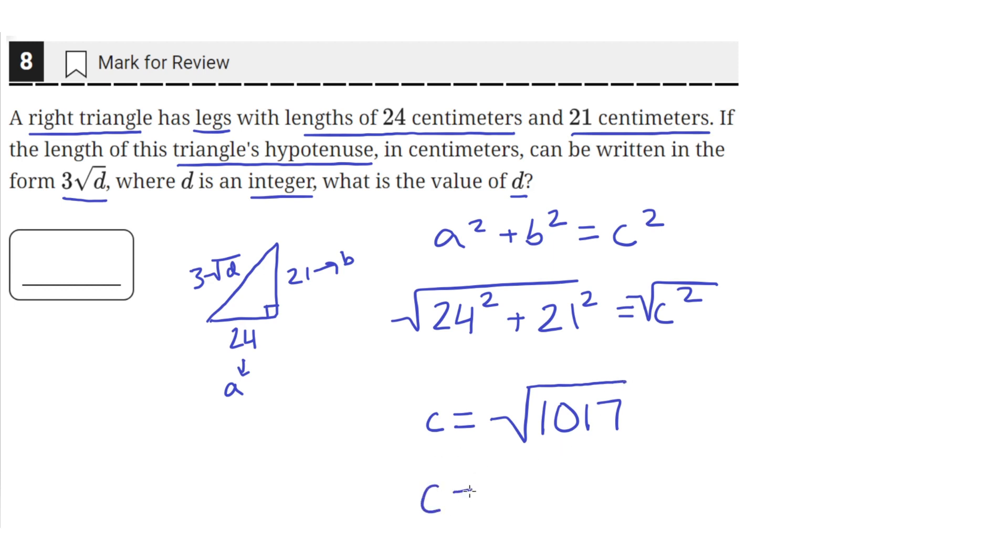We can simplify down the square root to 9 times 113, since 9 times 113 is equal to 1017. And since this is the square root, the square root of 9 is just equal to 3. So we can simplify this to 3 times the square root, and the 113 will remain inside.